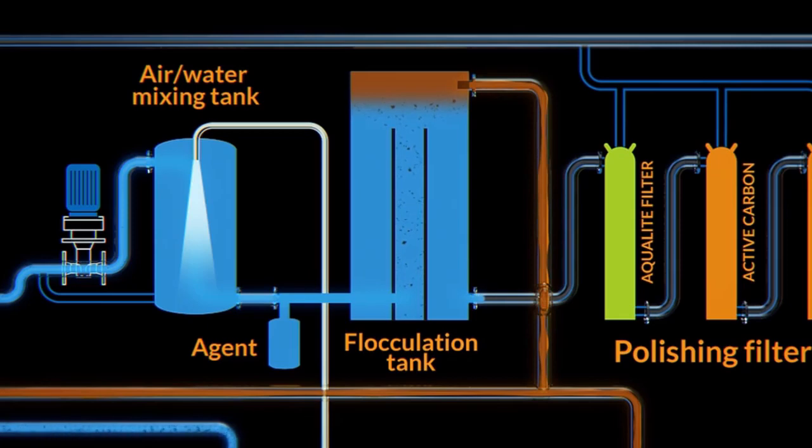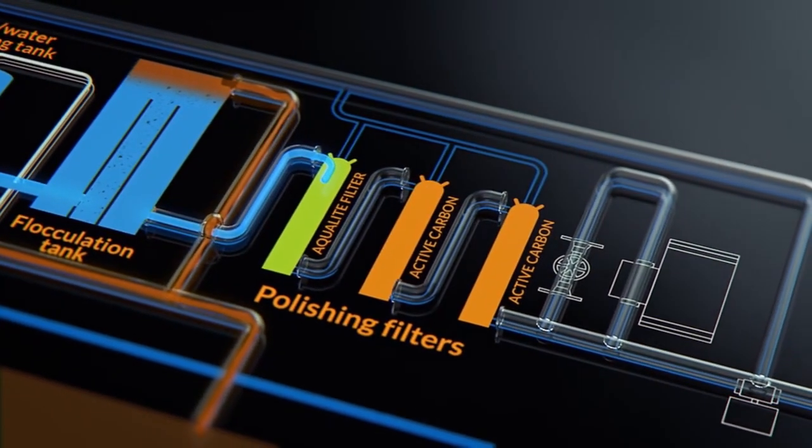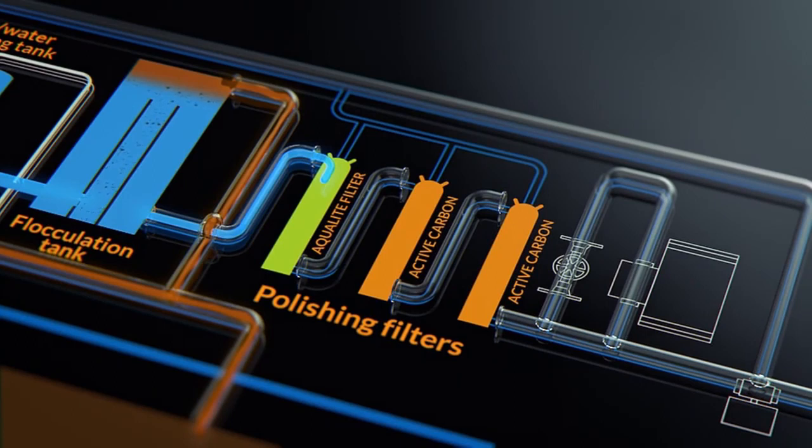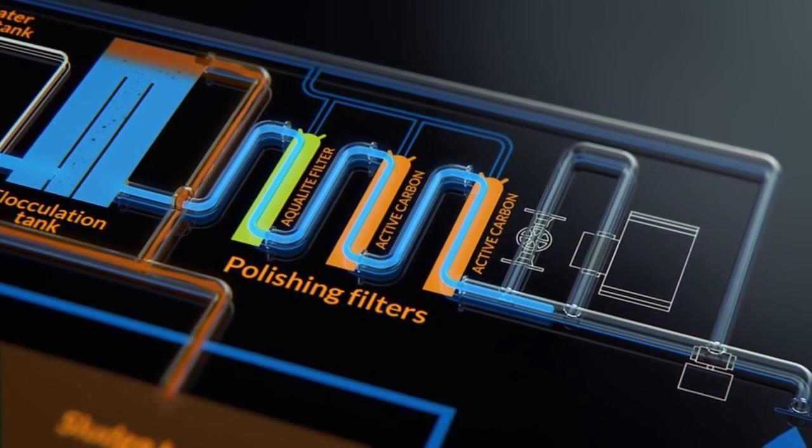The partially treated bilge water now passes to the polishing filters. To ensure a constant ppm value well under 15 ppm, there are three filters fitted in line before the bilge alarm. The first stage is filled with a coarse sand filtering medium, aqua-like mineral, and the next two stages are filled with active carbon.